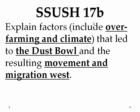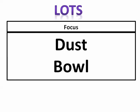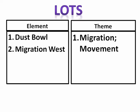Let's look at Standard 17, Substandard B: explain factors that led to the Dust Bowl, including over-farming and climate, and the resulting movement and migration west. We're going to talk about two things: what caused the Dust Bowl — over-farming and climate — and then the movement and migration west, which is very important.